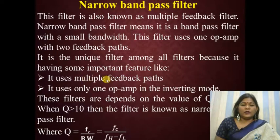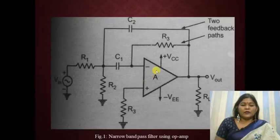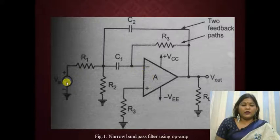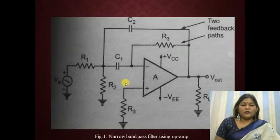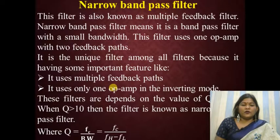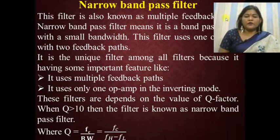This filter is called a multiple feedback filter because it has multiple feedback paths and uses only one op-amp in the inverting mode. The input is applied at the inverting terminal, so the op-amp works in inverting mode only. These filters are basically dependent on the value of the Q factor.